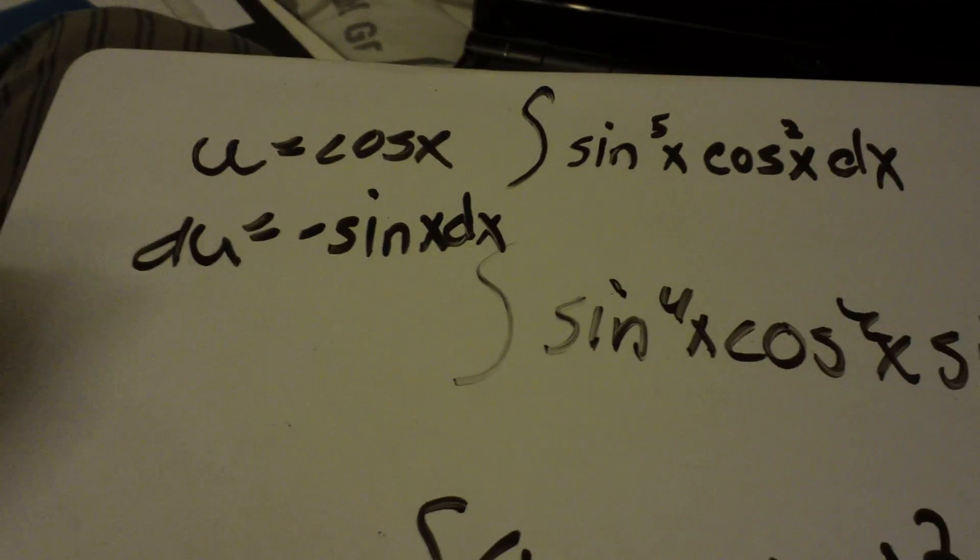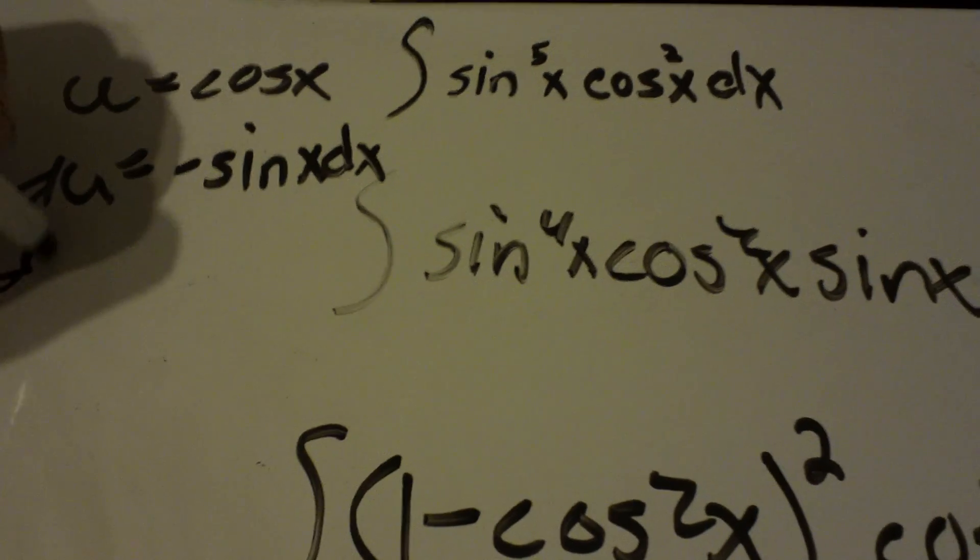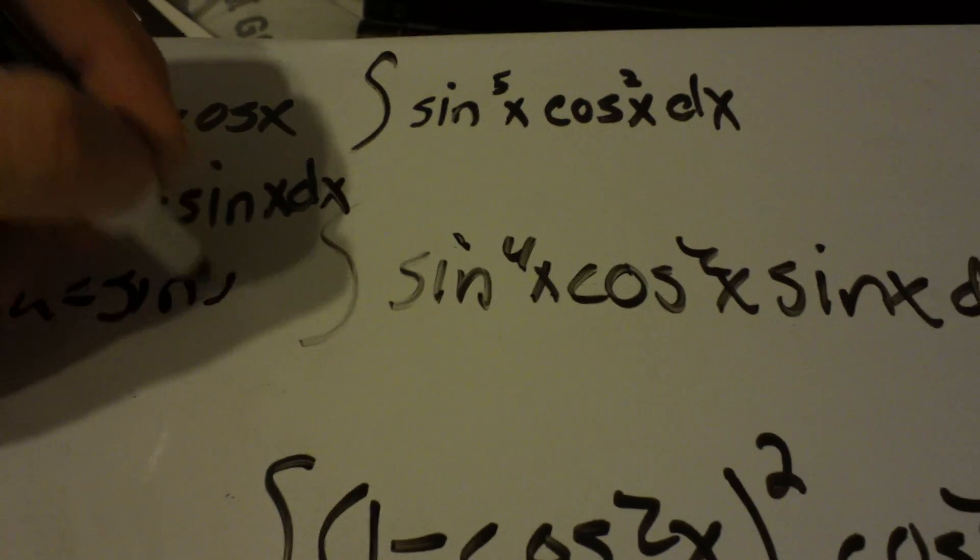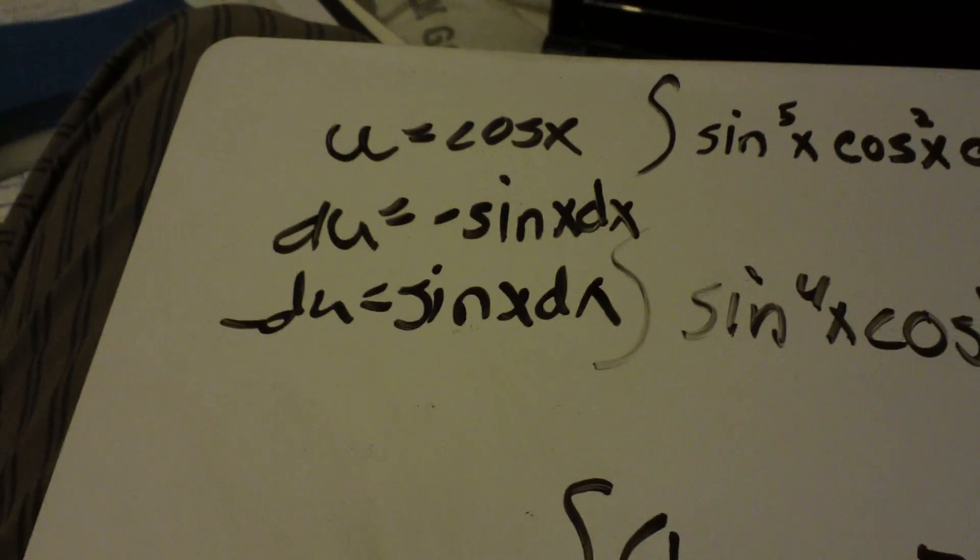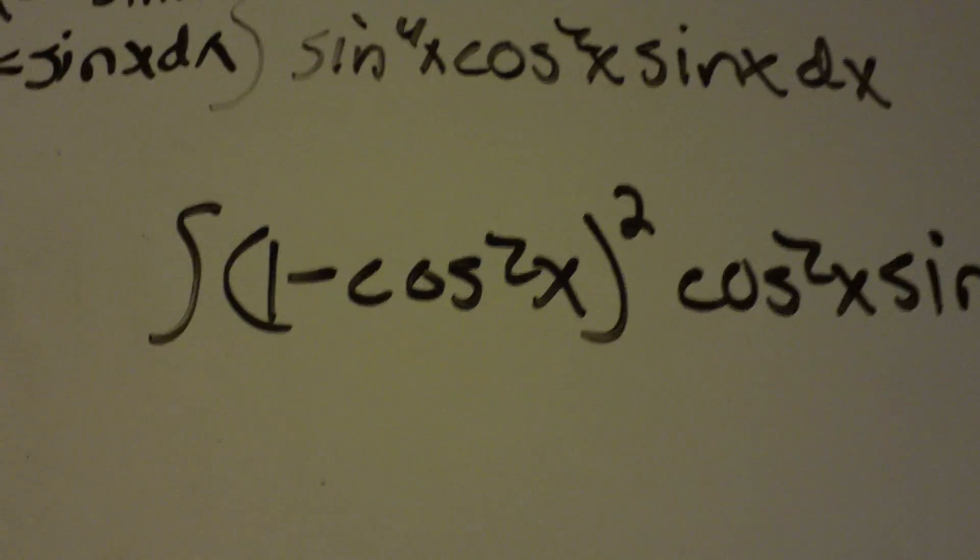Now, there's not a negative in the problem, so we want to move this negative to the other side, so it will be negative du equals sine x dx. So now we have our u and du, and now we can begin to plug in.